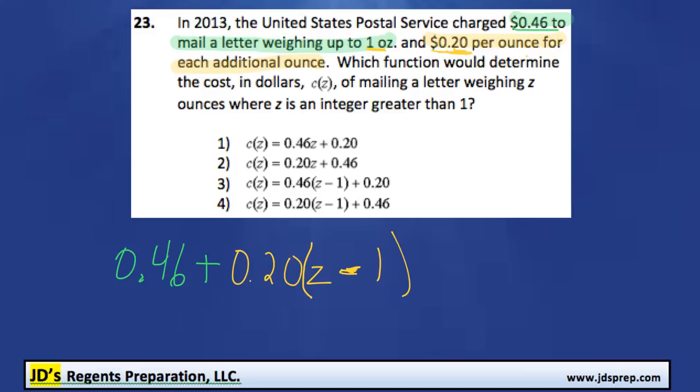If that's still kind of confusing, you can think of maybe an example. Let's say if you were sending a package that weighed 4 ounces, you would pay the 46 cents plus 20 cents times, well, for a 4 ounce, it's 3 more than 1, right? 4 is 3 more. So you would do 20 cents times 3. And we got that number of 3 by taking 4, the weight of the package, and subtracting 1 from it.